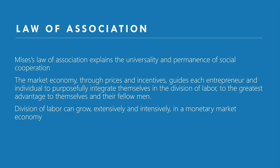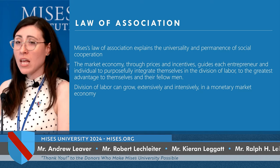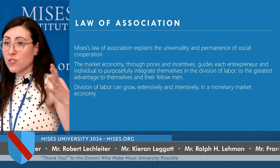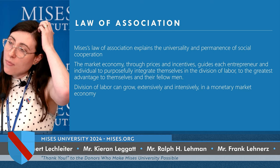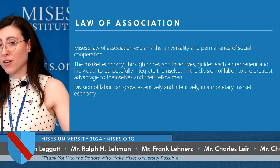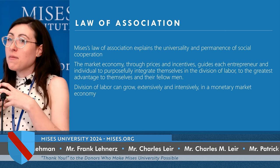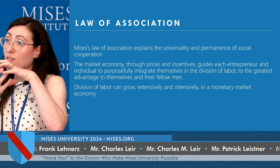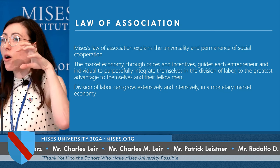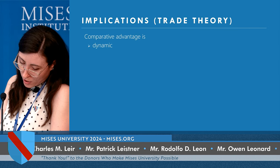Division of labor can grow. When Mises says division of labor can grow extensively, he means it can grow to encompass the whole world — growing in the number of people involved. When he says it can grow intensively, he means it can grow in terms of the vertical aspects — how our processes of production can specialize further. And that can only happen in a monetary market economy.